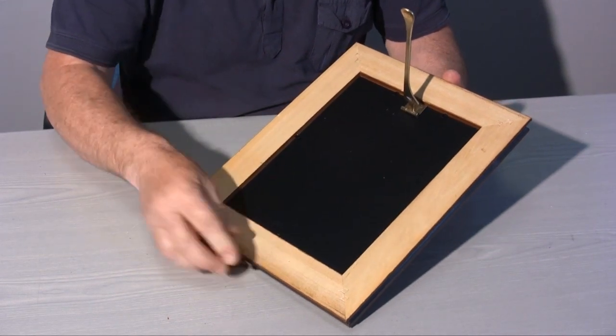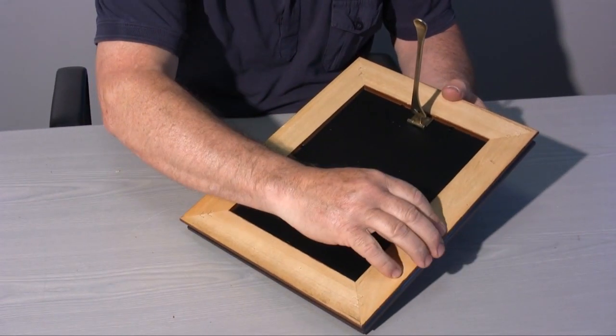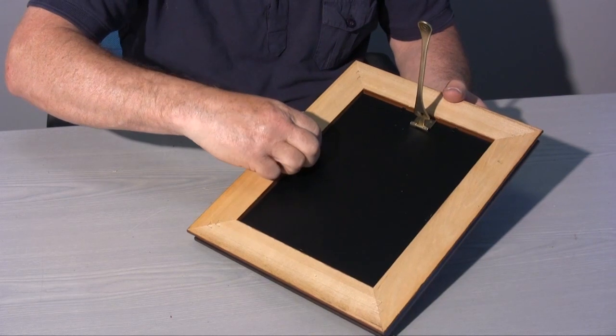Flexible tabs can be folded using your fingers to remove the backing board when you want to change the photo.